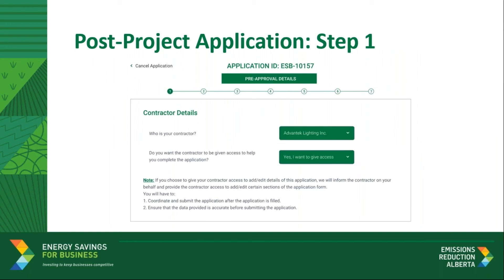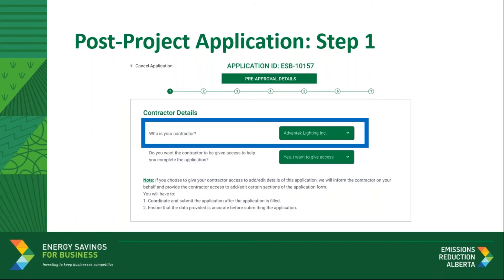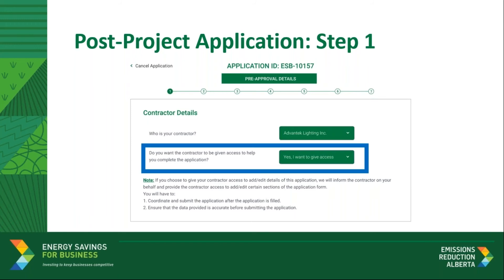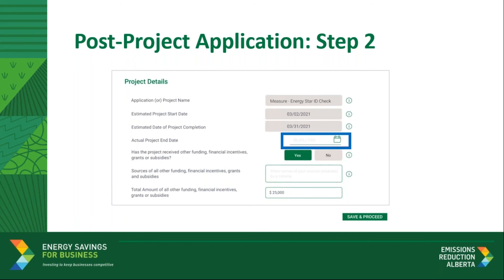Only the participant can start the post-project application. At step one, you must confirm the identity of your contractor. If the participant changed contractors from the pre-approval application, they can choose a different eligible contractor from the dropdown at this stage. They will then be given the option to grant the contractor permission to access and contribute to the application. If the contractor is granted access, the system will alert them by email. It is the participant's responsibility to ensure the application is completed and submitted, with or without the intervention of the contractor, and to ensure that all information is accurate. In step two, the participant must review the project details and will be required to add the actual project end date, which must be a date from the past. The estimated project start and estimated project end date cannot be changed.